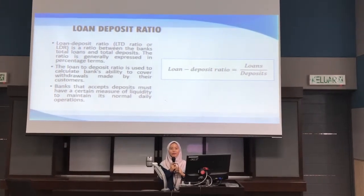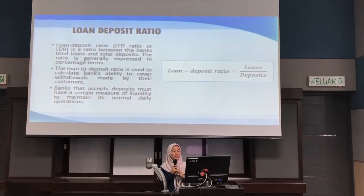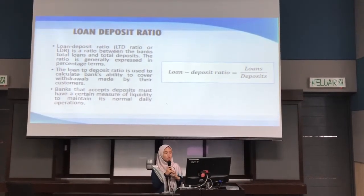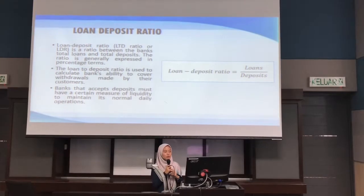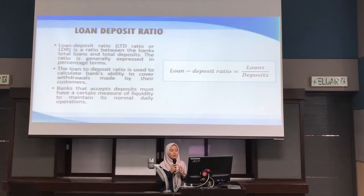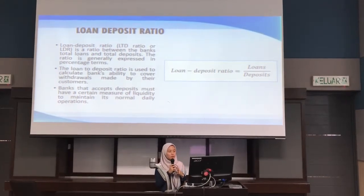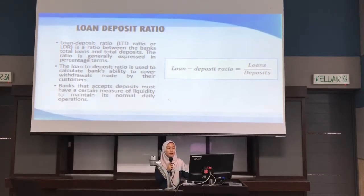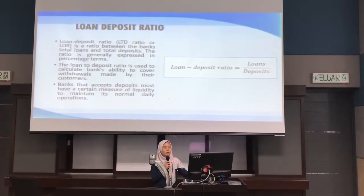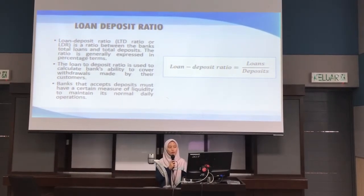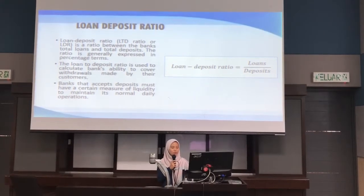Assalamualaikum and a very good afternoon. My name is Nur Amir Atika, metric number 240954. Today I would like to present about the loan deposit ratio of CIMB Islamic. The loan deposit ratio is a ratio between the bank's total loans and total deposits, generally expressed in percentage terms. It is used to calculate a bank's ability to cover withdrawals made by their customers. Banks that accept deposits must maintain a certain measure of liquidity for normal daily operations. The formula is loans divided by deposits.